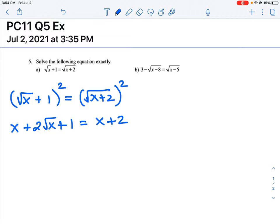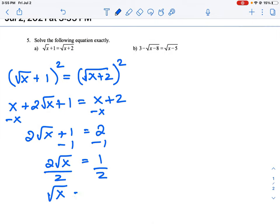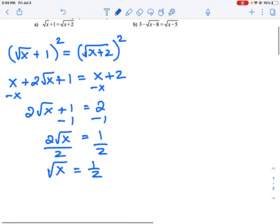So now we can collect like terms. We can subtract x on both sides, and that will get rid of the x term. And then we are left with 2, and then we can subtract 1 on both sides. We're left with 2 root x equals 1. And then to solve this, we simply just have to divide by 2 on both sides. And we're going to be left with root x equals 1 half. And then again, we need to remove the radical. So we square both sides again, and this leaves us with x equals 1 quarter.